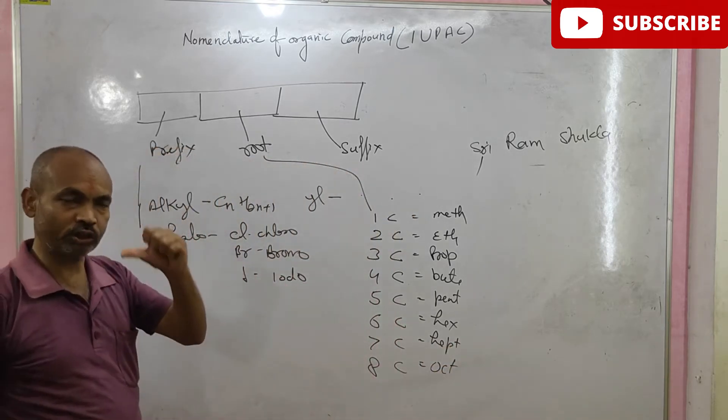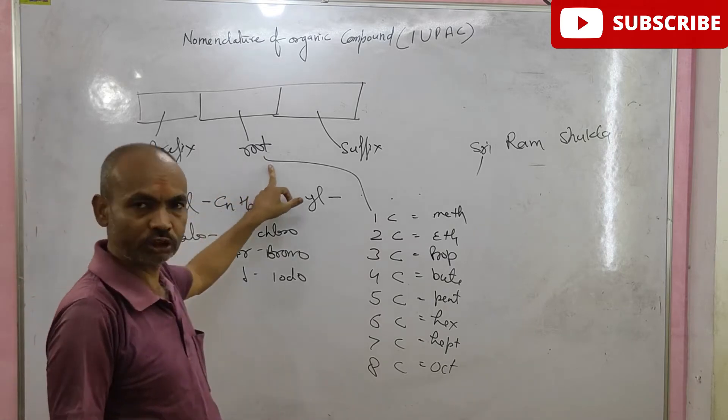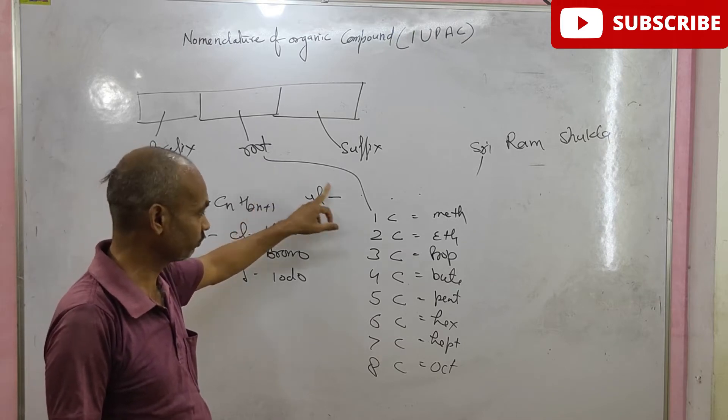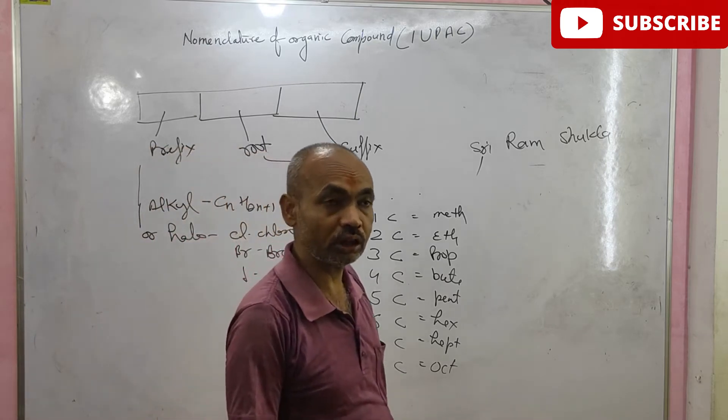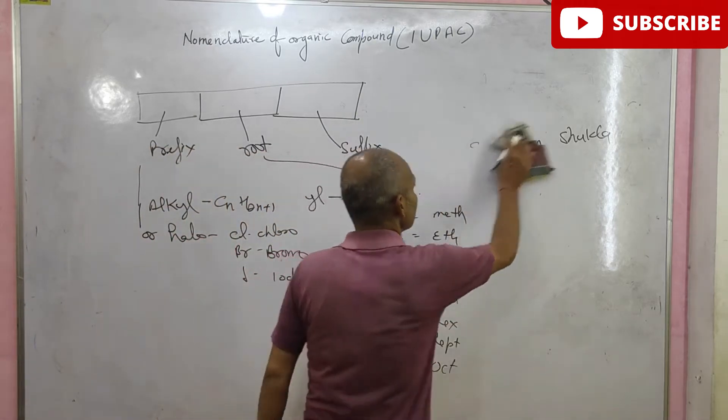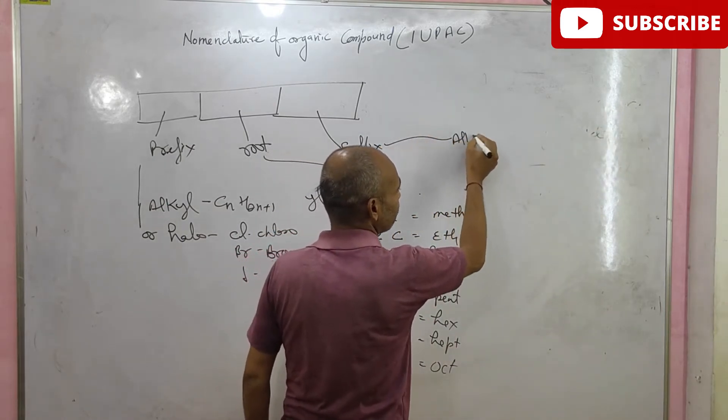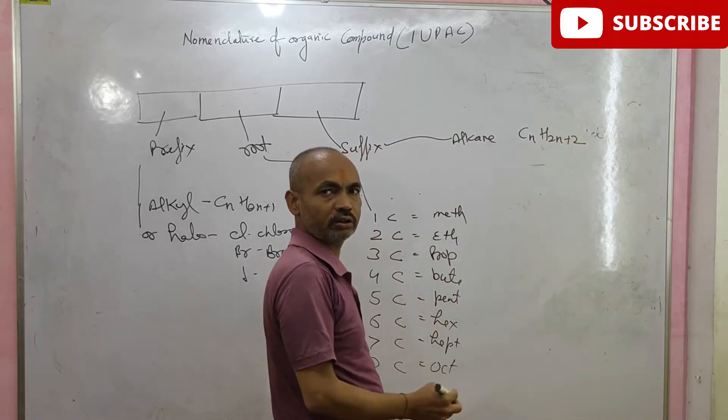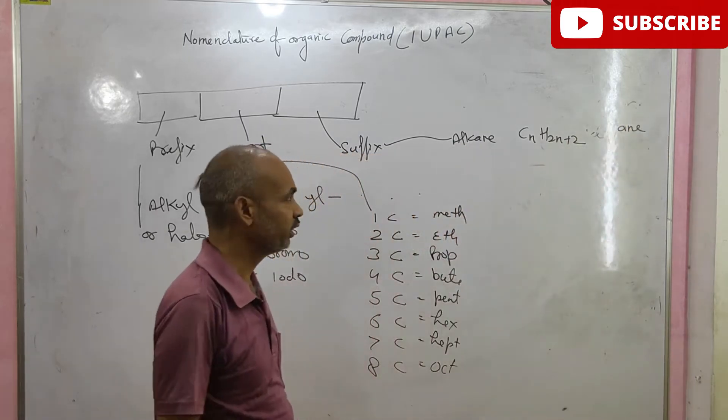We have discussed two points. In nomenclature, prefix, generally alkyl or halo group. And root, which depends on the number of carbon atoms present in the longest chain. And in suffix, it depends on general formula. What is general formula? General formula for alkane: CNH2N plus 2. And its suffix is ane. Suffix is ane.